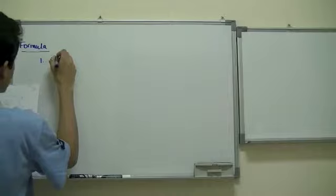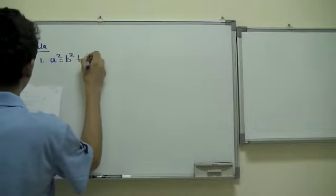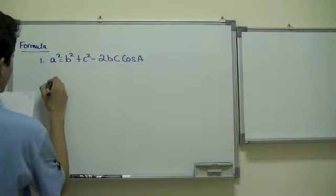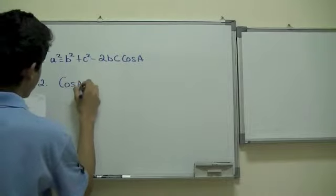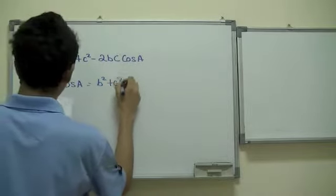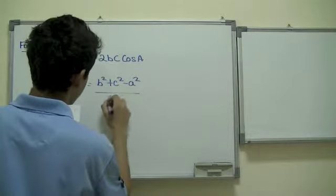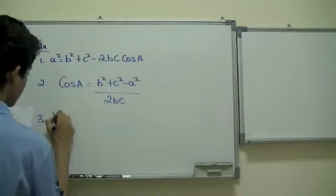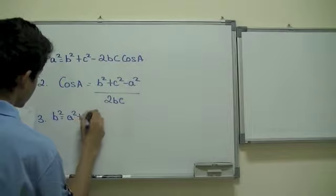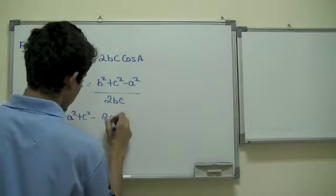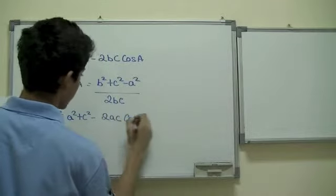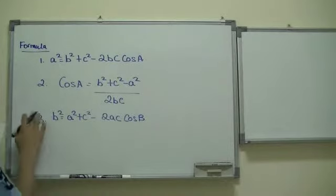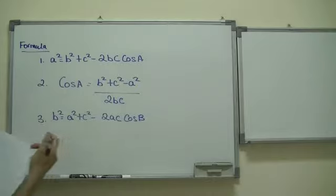There are three formulas and basically you need to use three of them to find something about a triangle. The first one is a squared is equal to b squared plus c squared minus 2bc cosine of angle A. The second one is cosine of angle A is equal to b squared plus c squared minus a squared over 2bc.